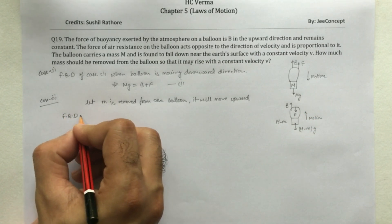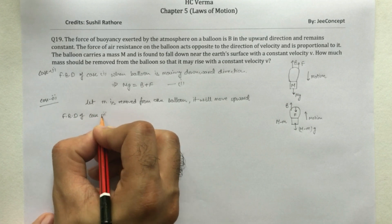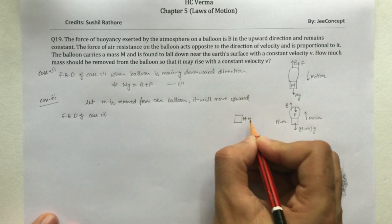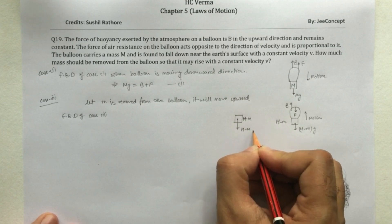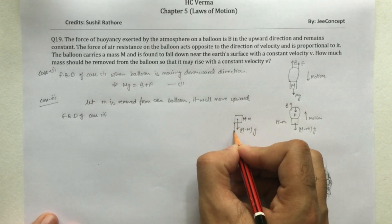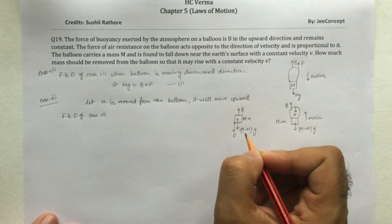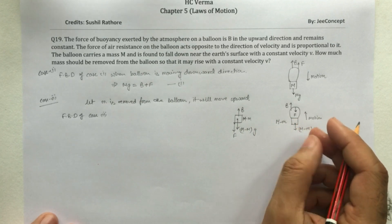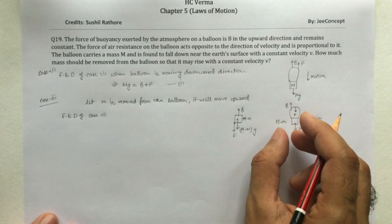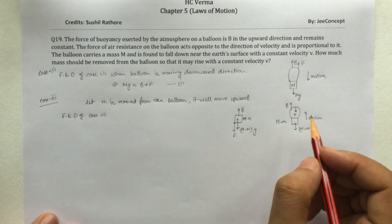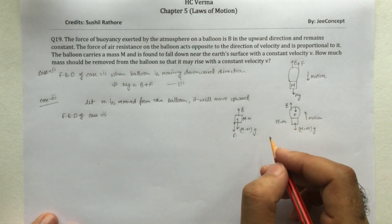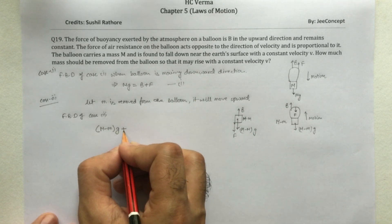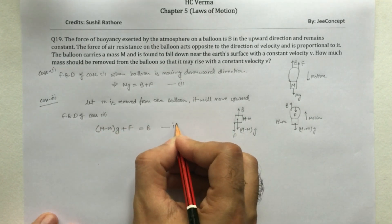Preparing the FBD of case 2: the force (M - m)g is acting downward, the force of friction F is acting downward, and the buoyancy force B is acting in the upward direction. In this case also the balloon moves with constant velocity, so the acceleration is 0, meaning the net force is 0. The upward and downward forces balance each other, giving us equation 2: (M - m)g + F = B.